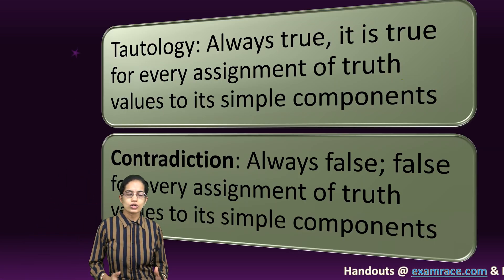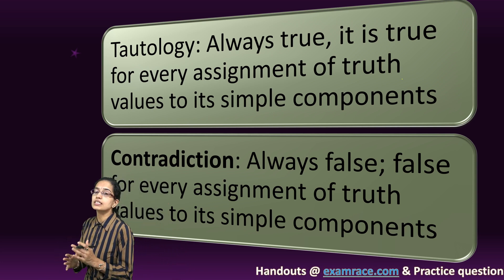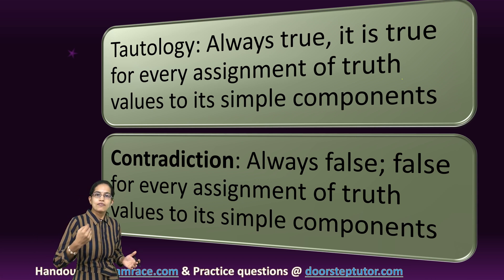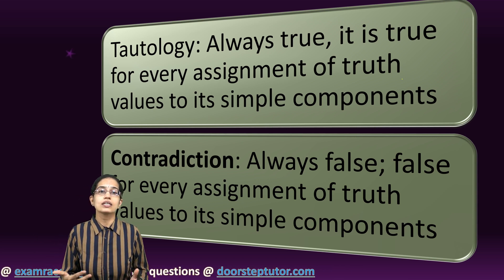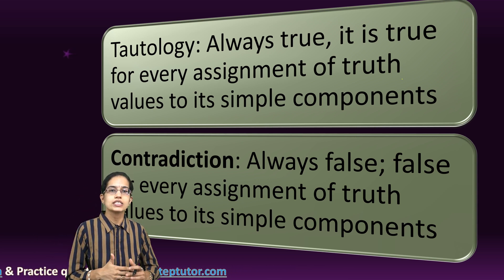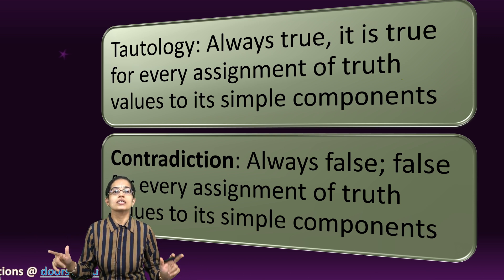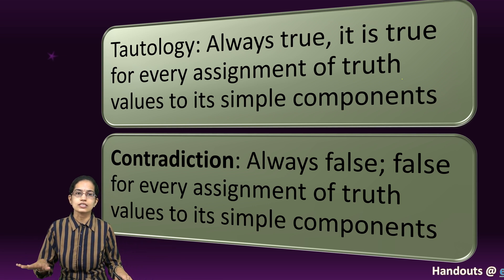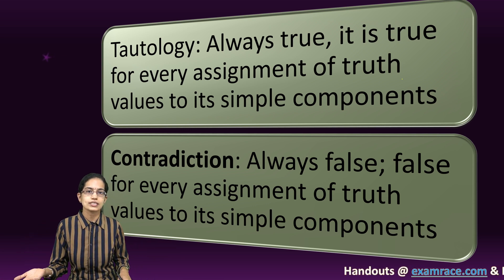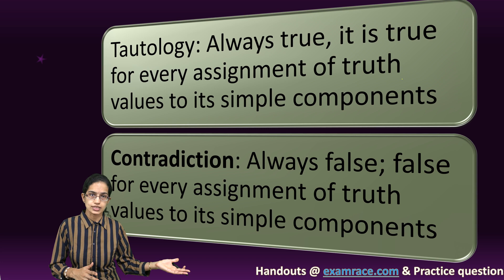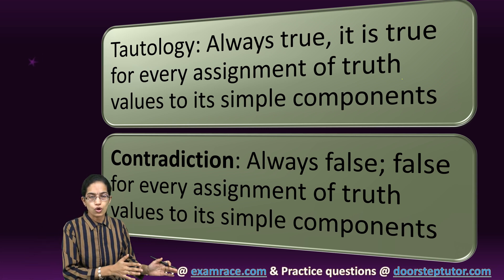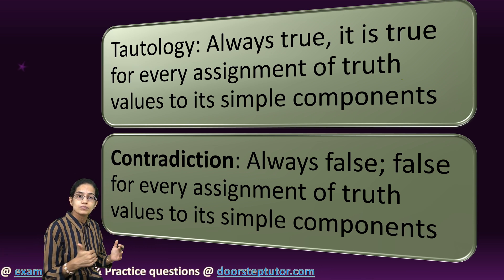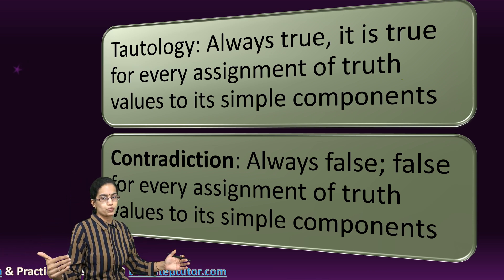Under tautology, we believe that things are always true. A simple example: if I make a statement — 'Indira Gandhi was assassinated or she was not' — this is always true. There are only two conditions and both are covered in the sentence. So she was or she was not are the only possible cases, and therefore this statement is always true.